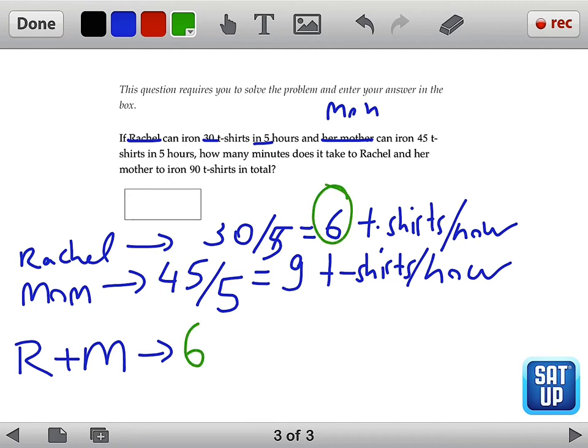Rachel will be doing 6, plus her mom will be ironing 9 t-shirts in also 1 hour, the sum would be 15 t-shirts.